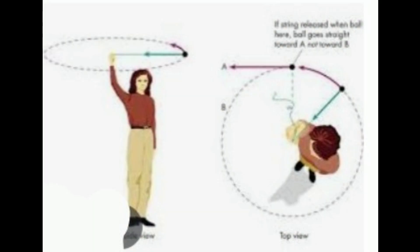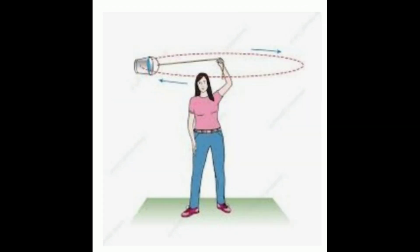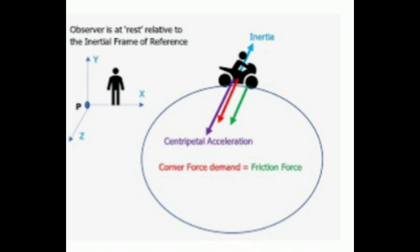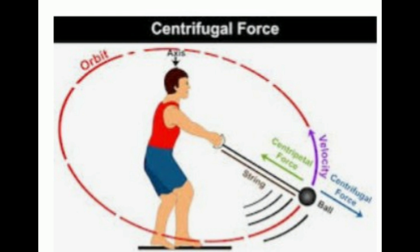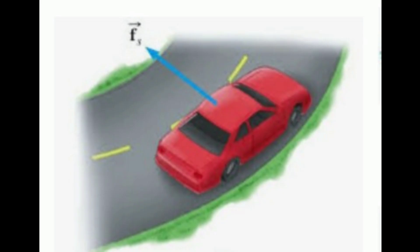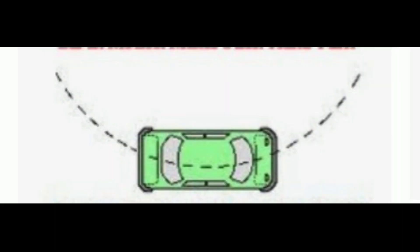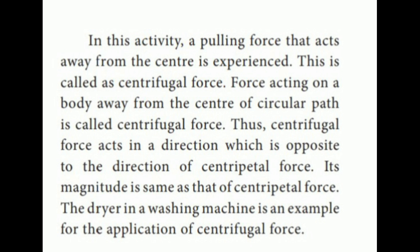Centrifugal force activity: Take a piece of rope and tie a small stone at one end. Hold the other end of the rope and rotate it such that the stone follows a circular path. Do you experience a pull or push in your hand? A pulling force that acts away from the center is experienced — this is called centrifugal force. The force acting on your body away from the center of the circular path is centrifugal force. It acts in a direction opposite to centripetal force, and its magnitude is the same as that of centripetal force. A dryer in a washing machine is an example of centrifugal force.